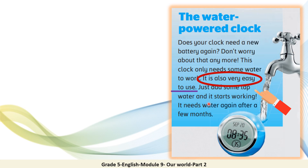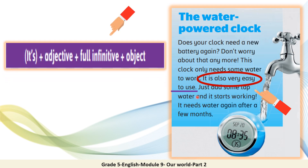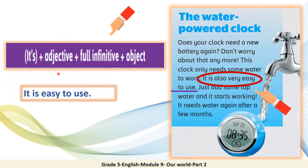Remember, dear students, 'to' and the base form of the verb is called a full infinitive. So here, it's: it's plus adjective, plus full infinitive, plus object. You can say: 'It's easy to use,' or 'It's easy to use the water power clock.'